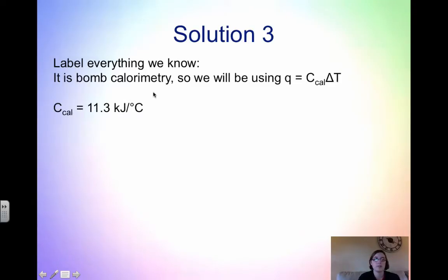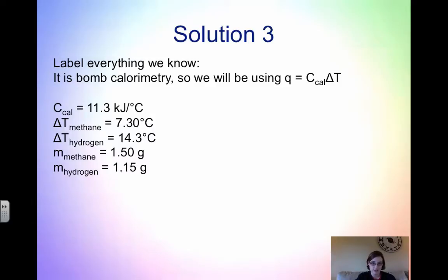The problem specified that the calorimeter constant is 11.3 kilojoules per degree Celsius. It also said that the change in temperature of methane is 7.30 degrees Celsius, and the change in temperature of hydrogen was 14.3 degrees Celsius. So we had the calorimeter constant, the change in temperature of methane and hydrogen, as well as the mass of methane and the mass of hydrogen. I wanted to get everything labeled so we have all the variables and can plug things in as we need to.